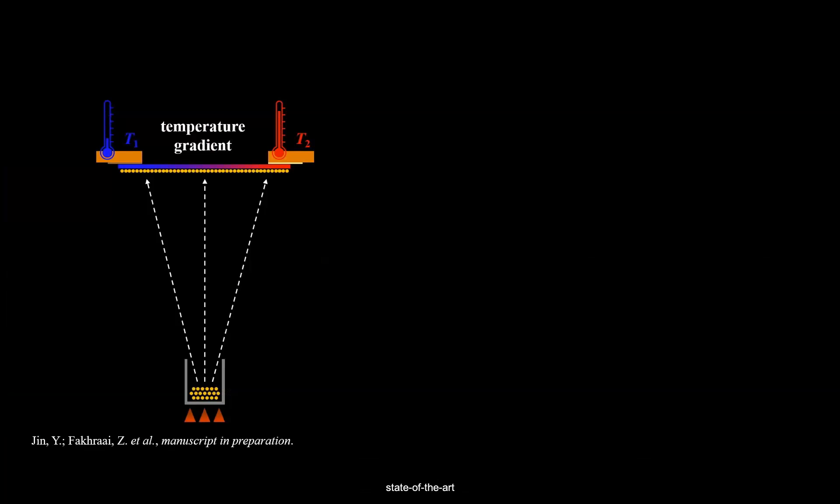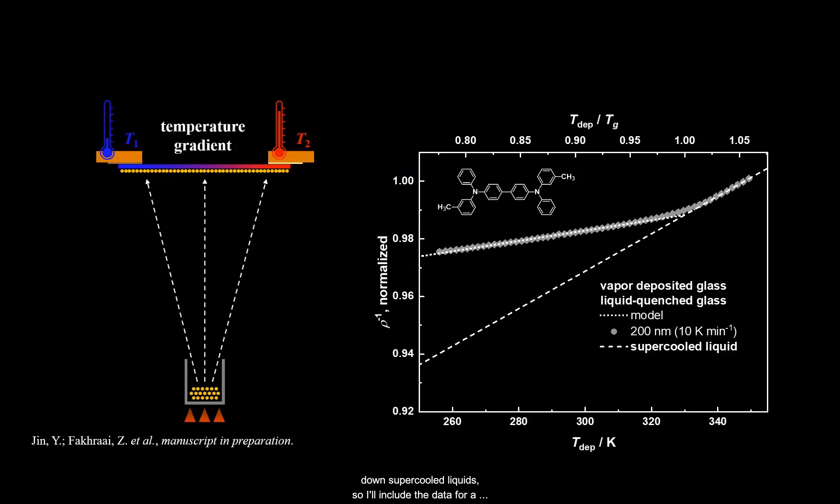Equipped with the state-of-the-art ultra-high vacuum system, we were able to prepare vapor-deposited glasses of TPD, as functions of both film thickness and deposition temperature, and characterize their density. At the beginning, I introduced the concept of glasses from those formed by cooling down supercooled liquids, so I'll include the data for a liquid quenched glass made at the standard cooling rate of 10 Kelvin per minute.